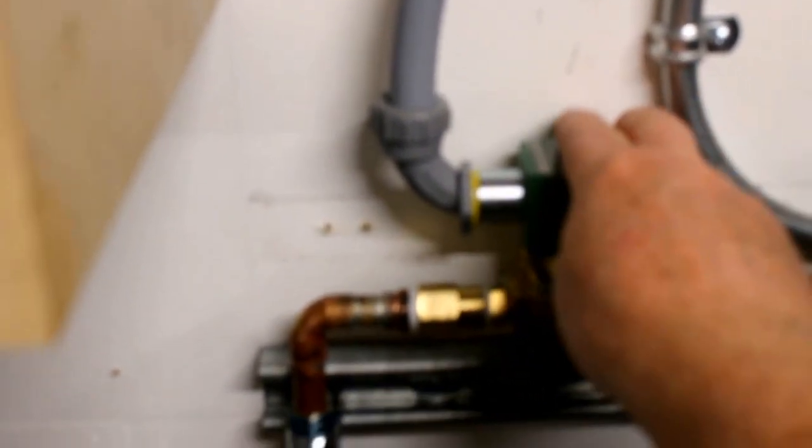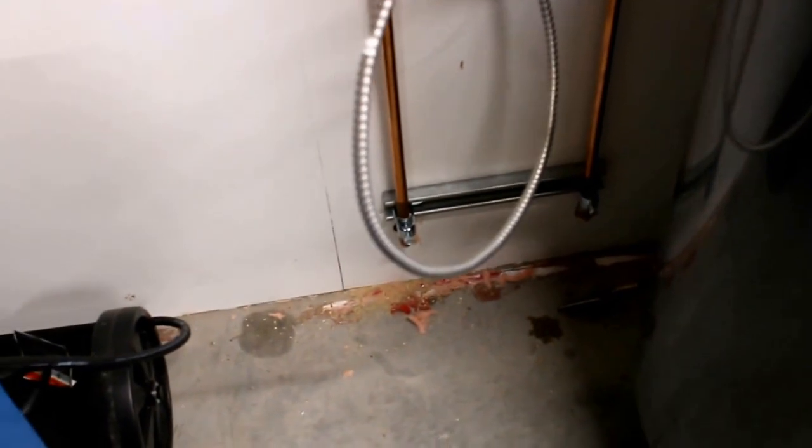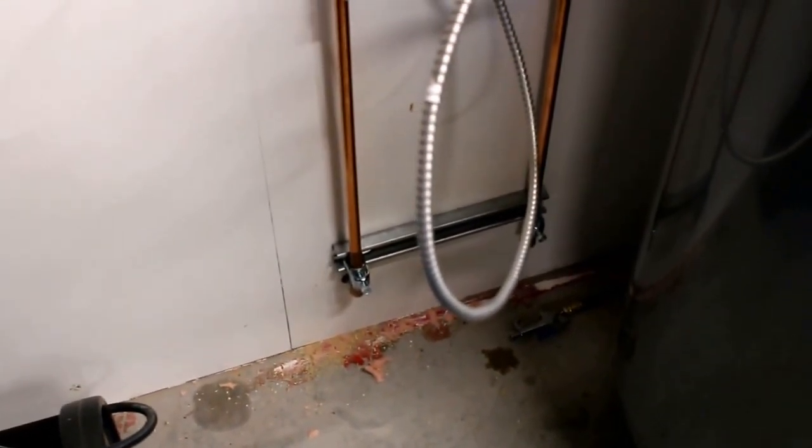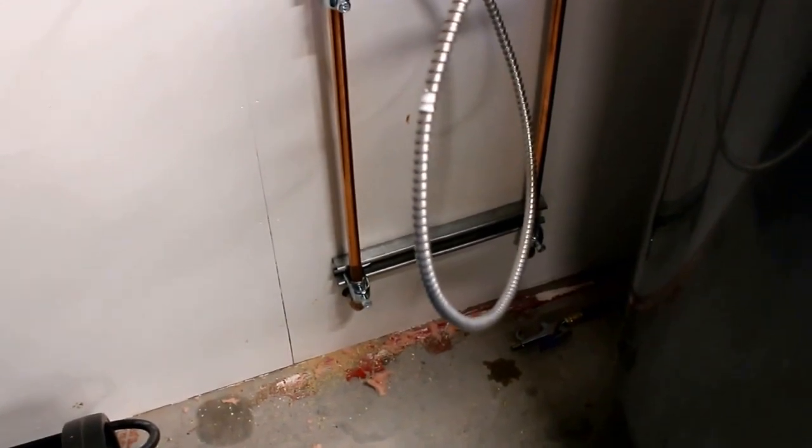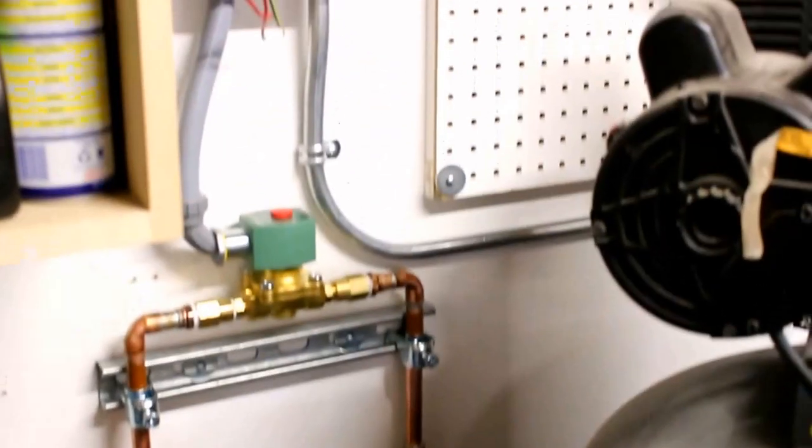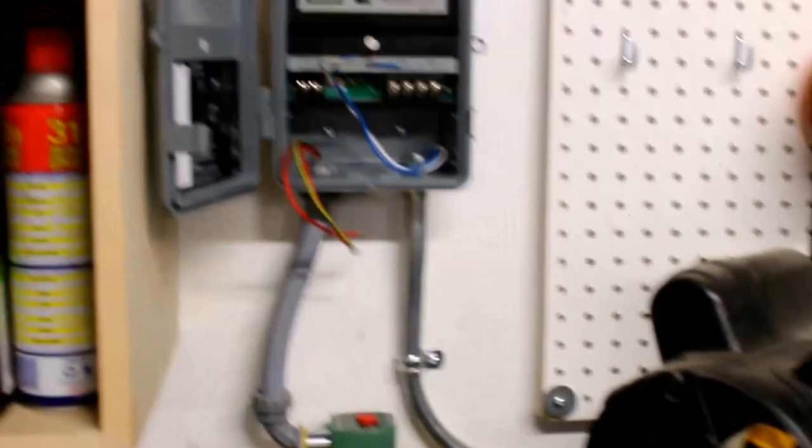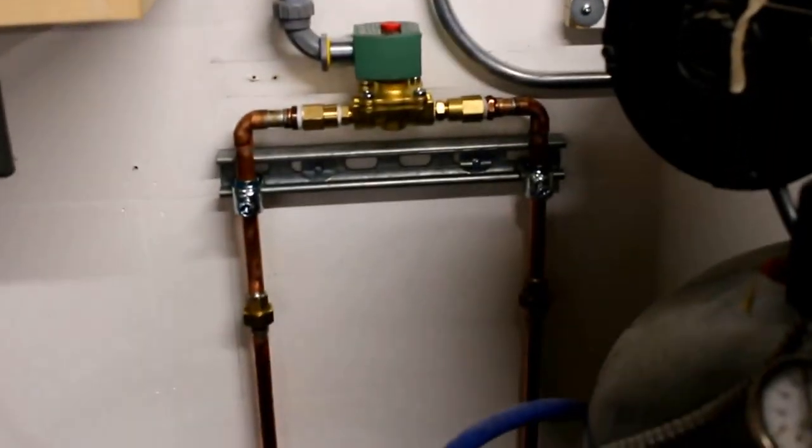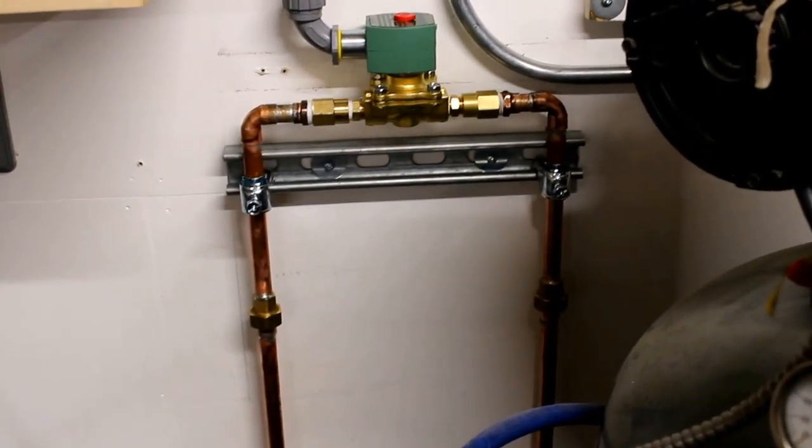I mounted the solenoid up here nice and high just in case you got to do anything to it, change the coil or anything, you're not trying to do it down on the ground. Drilled the hole through the wall, I've got it to the outside, just have to 90 it down into the drain rock next. Brought the power over from an adjacent receptacle so might get this finished up tonight.